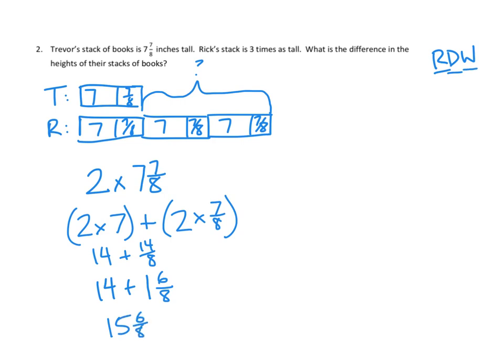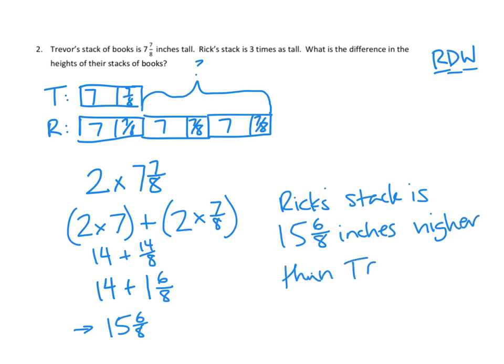And we now need to do our write part of our strategy because this, while it's an answer, is not what they asked for. They asked, what's the difference in height and their stack of books. I would say that Rick's stack is 15 and 6⁄8 inches higher than Trevor's. And now we're done with our read, draw, and write strategy.